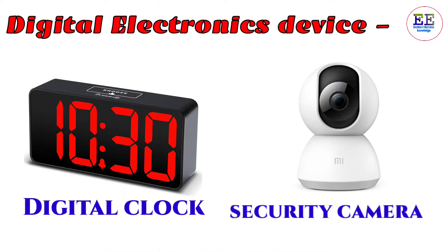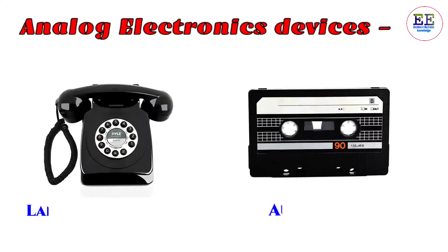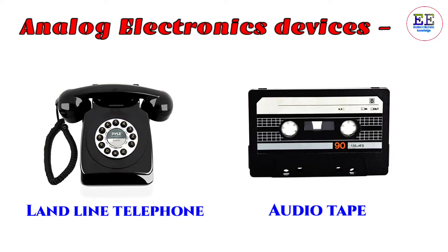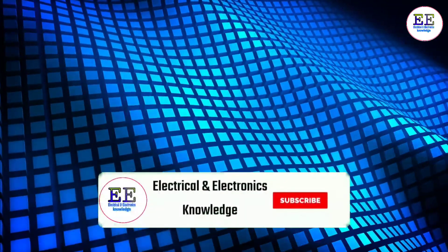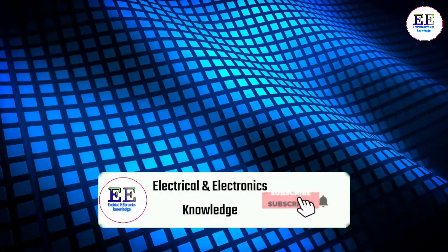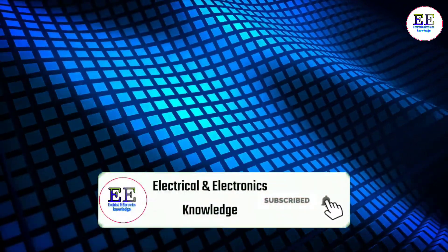Examples of digital electronics devices include a digital clock and a security camera. Examples of analog electronics devices include a landline telephone and an audio tape. If you get knowledge from this video, please subscribe to the channel and press the bell icon.